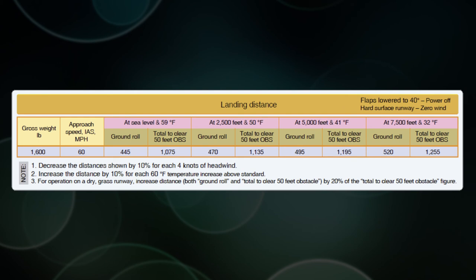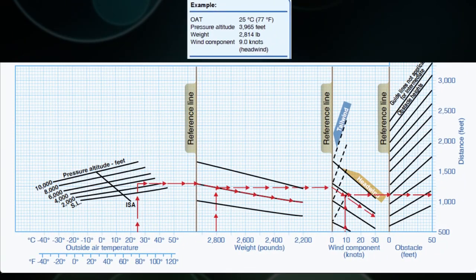So for landing distance, we're going to be doing the same sort of thing. You have, let's see, what do we have? 25 degrees Celsius, pressure altitude of, let's say, 4,000 feet, weight of 2,800 pounds, and 9 knots of headwind. And so we go and follow from 25 degrees up until we meet roughly 4,000 feet of pressure altitude, then jog right across to the reference line.